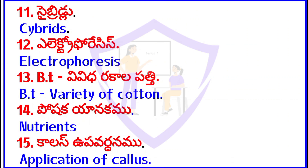Write about Cybrids. Twelfth: Electrophoresis. Thirteenth: BT variety — various types. Fourteenth: Nutrients — Poshak Yanakamu. Fifteenth: Application of Callous — Callous culture and its applications.